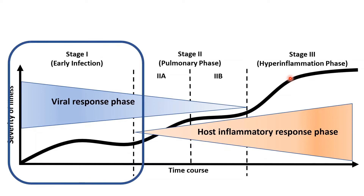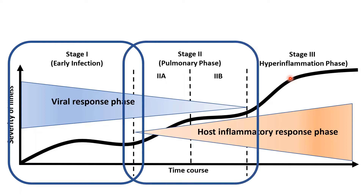Stage 1 is the early infection, occurring at the time of inoculation and early establishment of the disease. For most people, this involves an incubation period with mild symptoms. Diagnosis is based on PCR, and CBC may show some abnormality. Treatment is mainly symptomatic relief. Specific antiviral therapy would have been beneficial during this stage. Stage 2 is divided into 2a and 2b based on hypoxia — Stage 2a has tachypnea and Stage 2b has hypoxia. Corticosteroids might have a role in Stage 2.